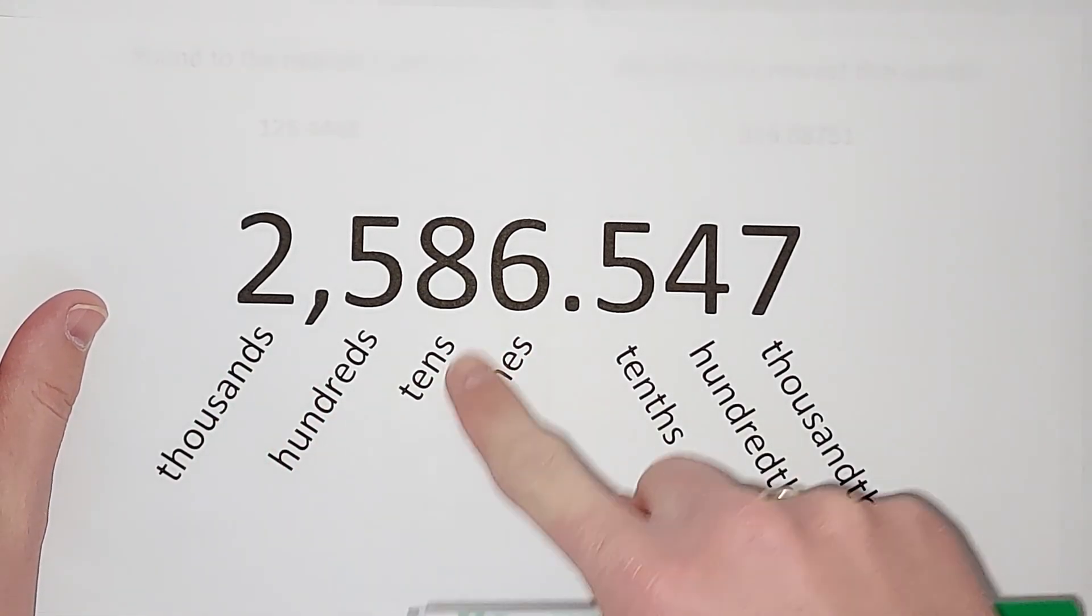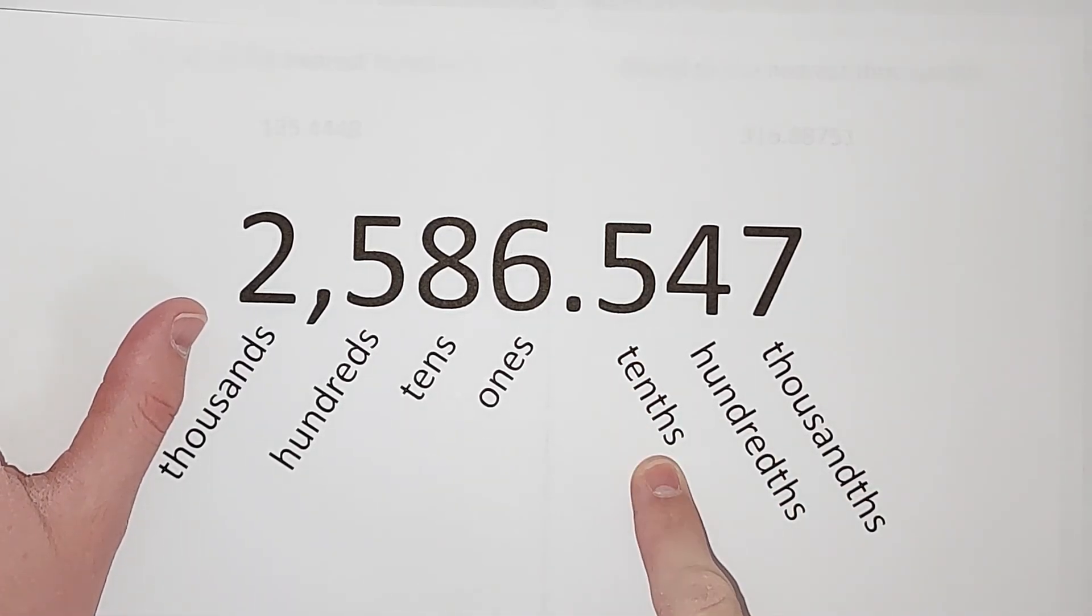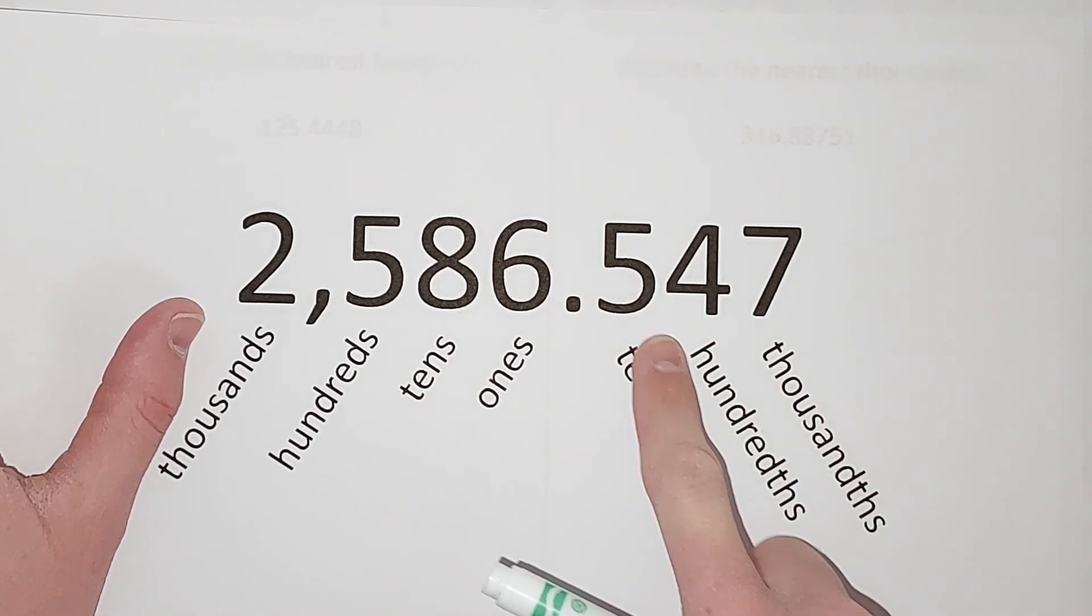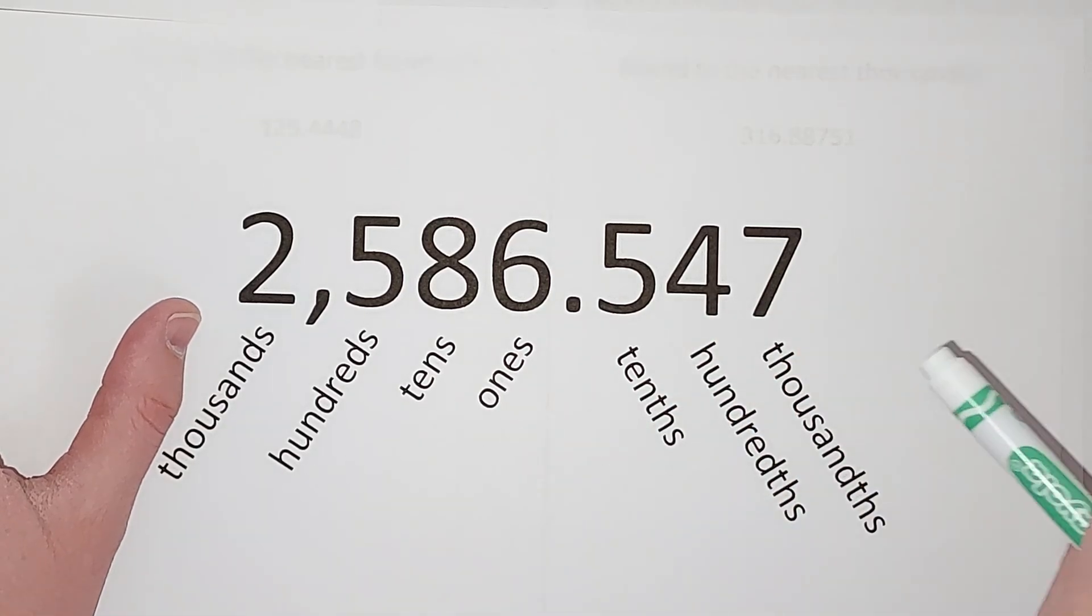Right after the decimal place, the first spot is called our tenths. The second spot after the decimal is called our hundredths. Third place is called our thousandths. Now this keeps going this way, right, just like it keeps going that way, but I just happen to stop right there.